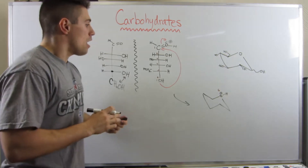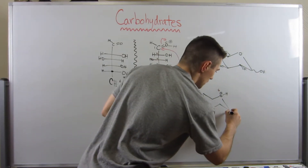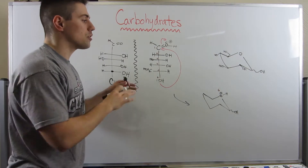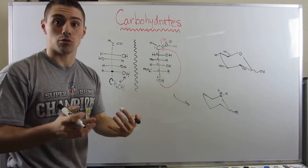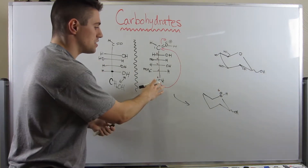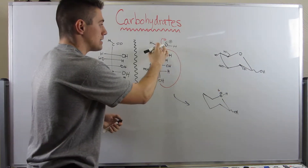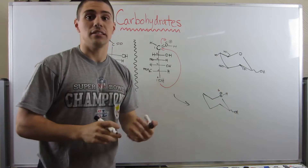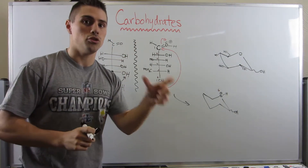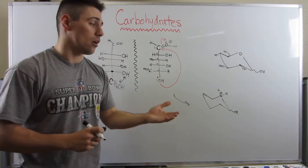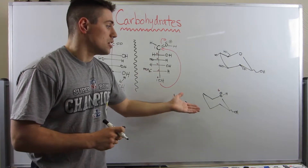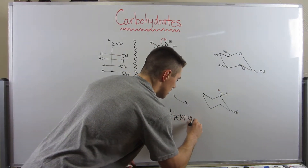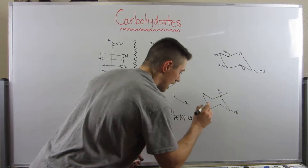All this is is the oxygen coming up and attacking this carbon. Back in Chapter 17 we would attack the carbonyl with two groups — that was an acetal. Well, now we're only attacking once, so this is what you would call a hemiacetal — just half of an acetal.